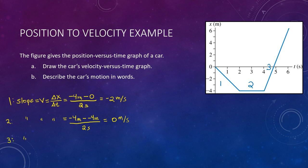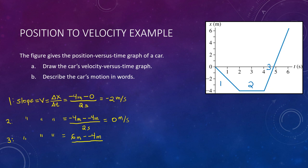For the last segment, slope equals velocity = Δx/Δt. The final position is 6 meters, minus the initial of −4 meters, all divided by two seconds. Six minus negative four is the same as six plus four, which is ten, divided by two — giving five meters per second. We now have the three velocities for this vehicle's motion and can construct our velocity versus time graph: negative two for the first two seconds, zero for the middle two seconds, and five for the last two seconds.